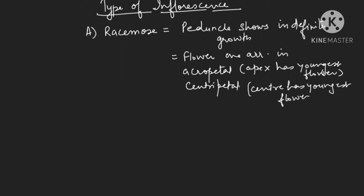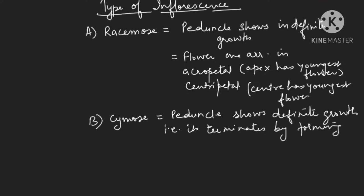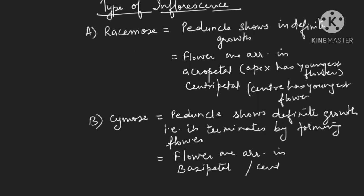The second type is cymose, in which the peduncle shows definite growth — meaning it terminates by forming a flower. As a result, flowers are arranged either in basipetal manner — where the youngest is at the base — or in centrifugal manner, where the youngest is at the periphery.